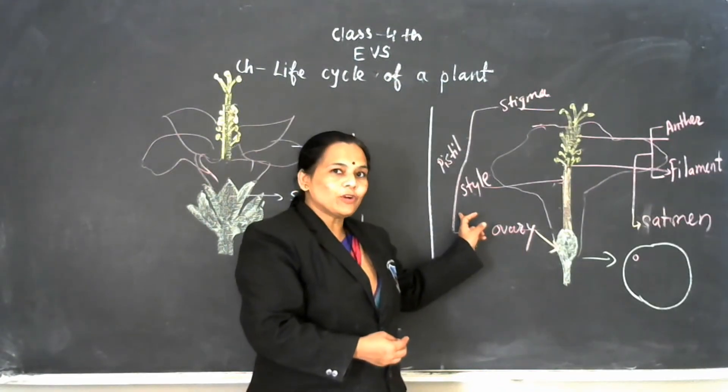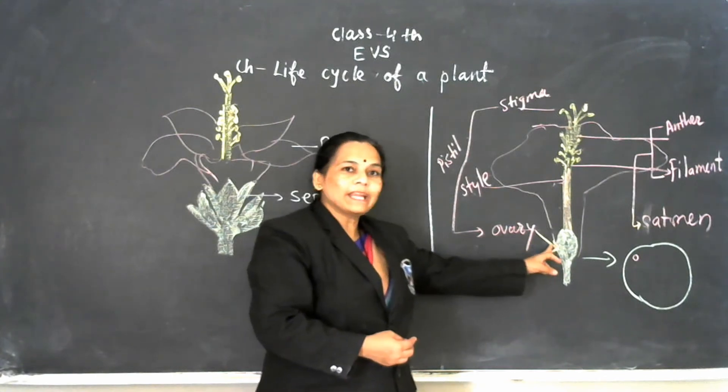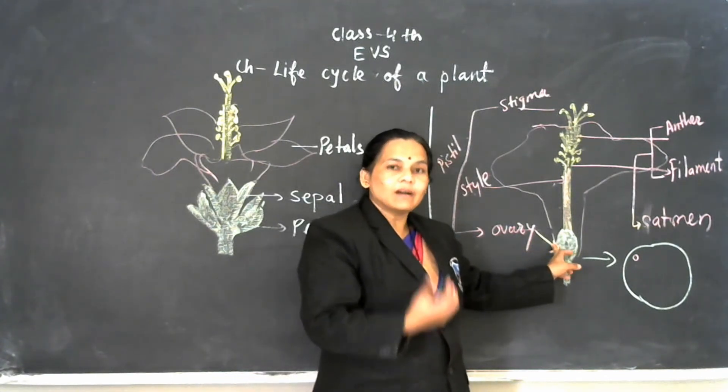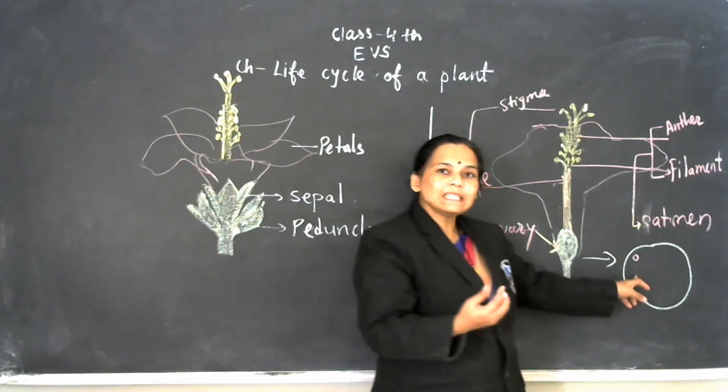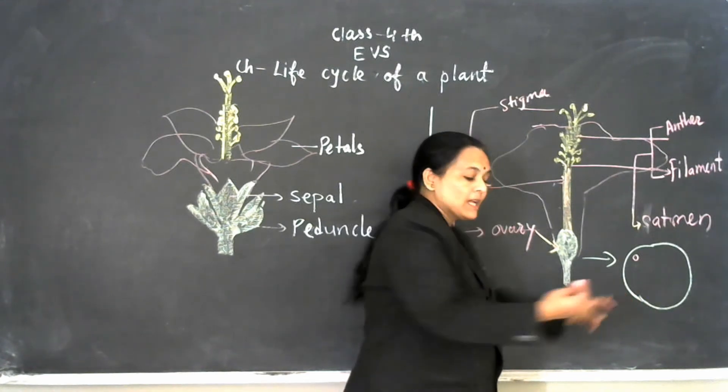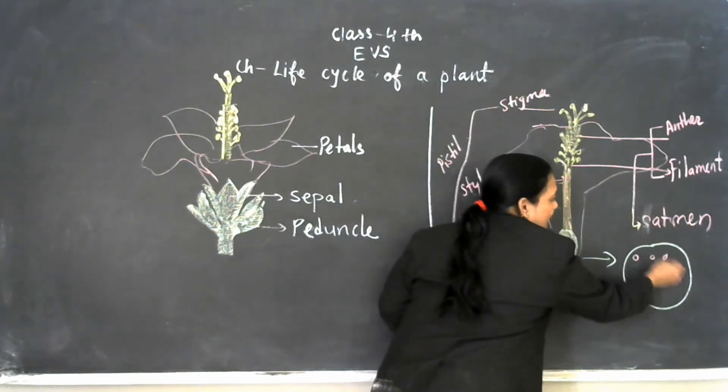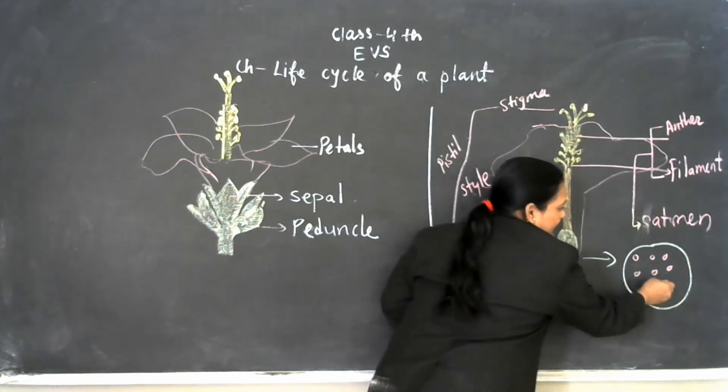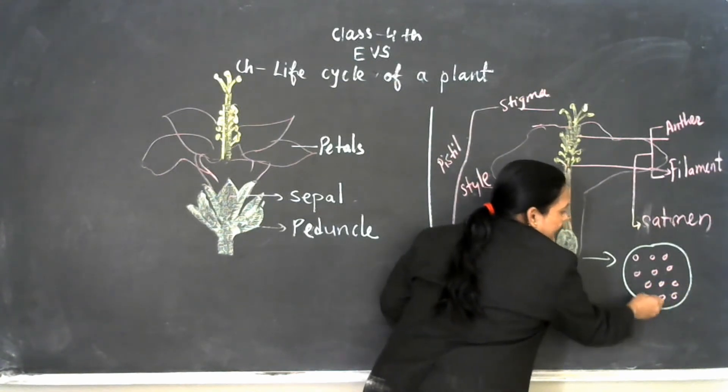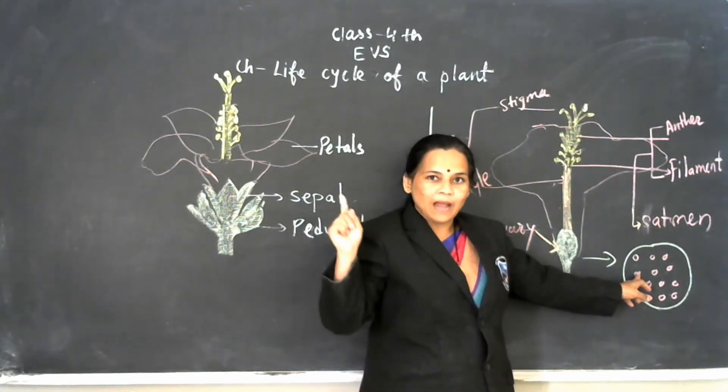As I told you earlier, this ovary, they made a fruit like this. And in this fruit, the seeds are there. And in this way, we get again seeds of that plant, then plant starts their life cycle again.